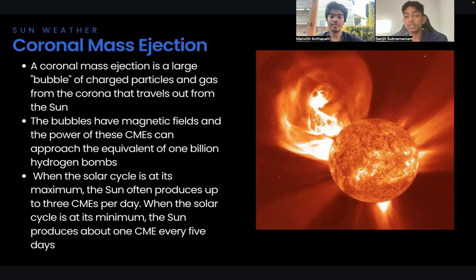A coronal mass ejection is a large bubble of charged particles and gas from the corona that travels out of the sun. The bubbles have magnetic fields and the power from these CMEs can approach the equivalent of one billion hydrogen bombs. That's a lot.